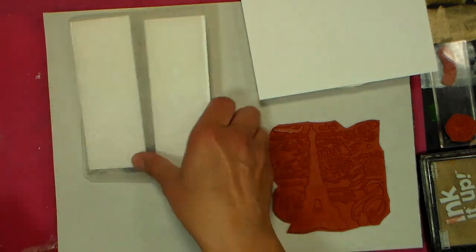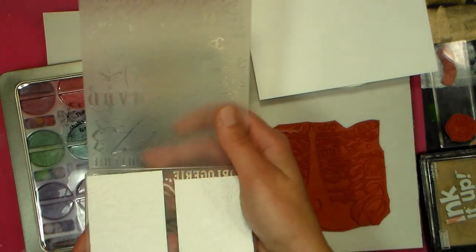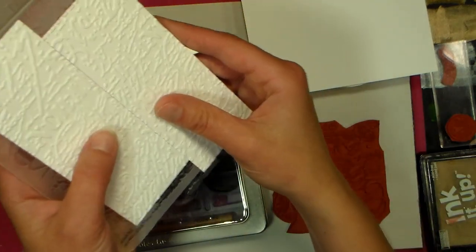Then I took a quarter sheet of that cardstock and I embossed it using an embossing folder. These are used with a die cut machine - you roll it through the die cut machine and the pressure makes the lovely embossed designs.